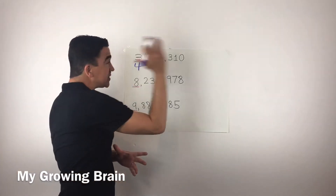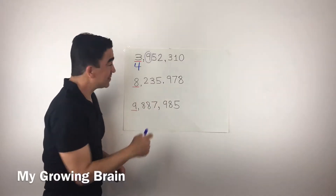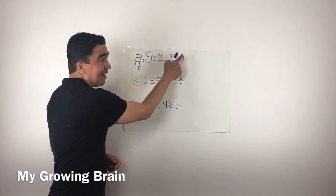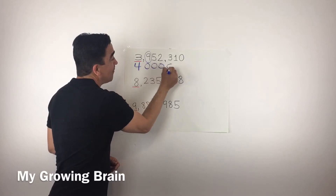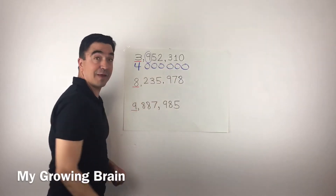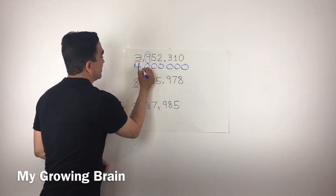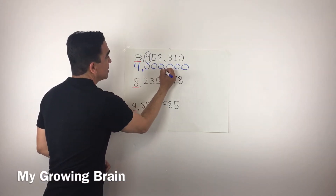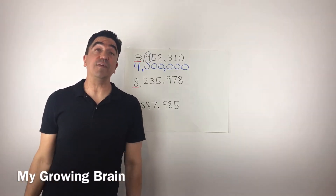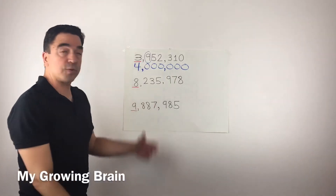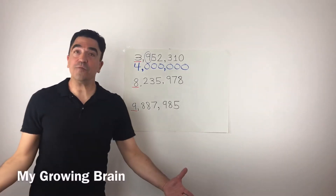So the three becomes a four. All the digits after become zero — one, two, three, four, five, six. Don't forget the comma. So, 3,952,310 rounded to the nearest million is four million.